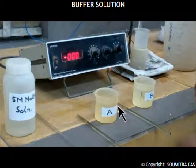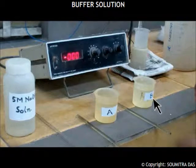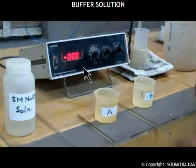Now in this demonstration I have taken two solutions in beakers tagged A and B. We have taken a 5 molar solution of NaOH and a pH meter. This is the electrode which we have to dip in the solution whose pH we wish to measure.